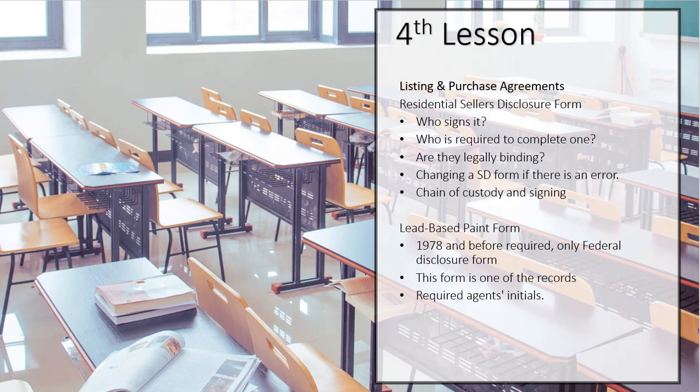So that's the second form we're going to be adding — the Residential Seller's Disclosure. Now there is a third form called the lead-based paint form or the lead-based paint disclosure. It is actually the only federal disclosure form that we have. If the house was built in 1978 or prior, you should emblazon this date upon your brain, because it is required that this lead-based paint form be submitted to the buyer.